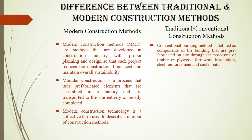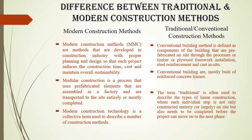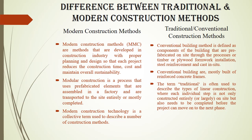Traditional or conventional construction methods define components of the building that are prefabricated on site through timber or plywood formwork installation, steel reinforcement, and cast in situ. Conventional buildings are mostly built of reinforced concrete frames. The term traditional describes a type of linear construction where each individual step is constructed entirely on site and must be completed before the project can move to the next stage.